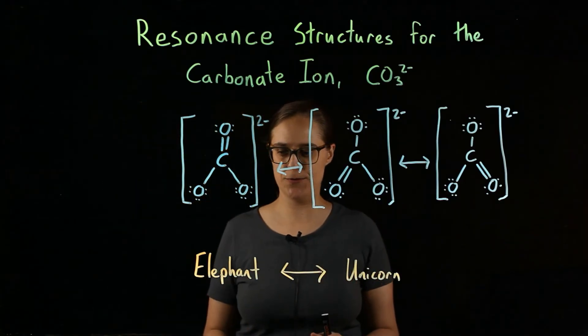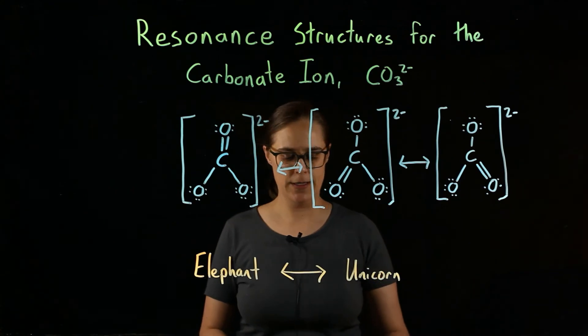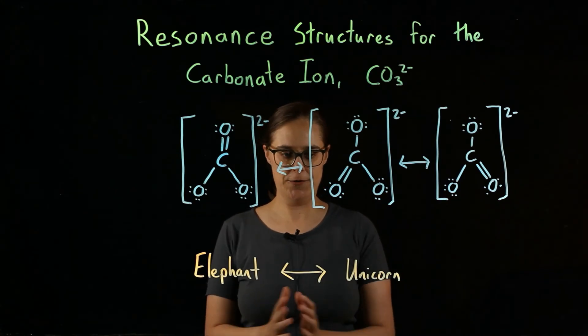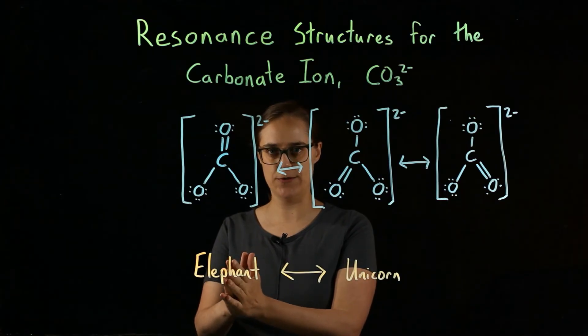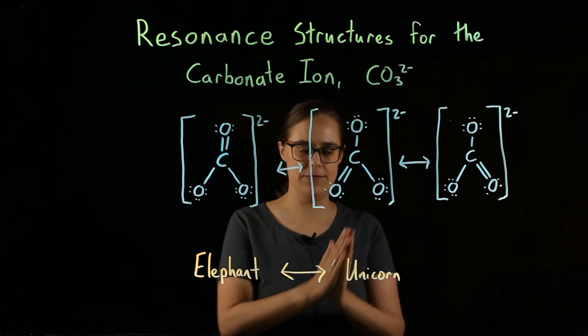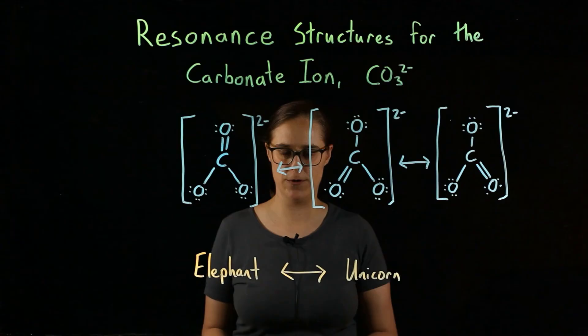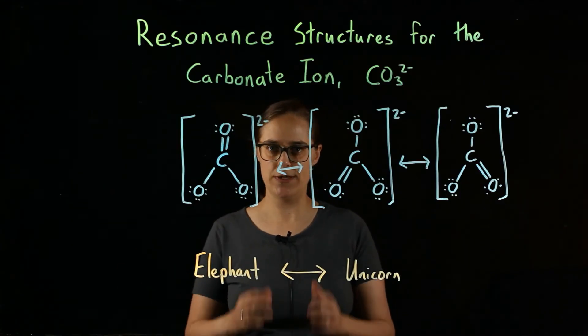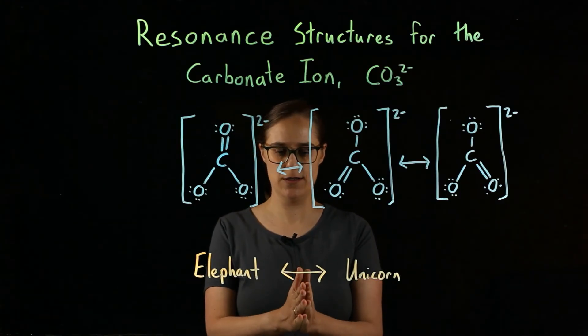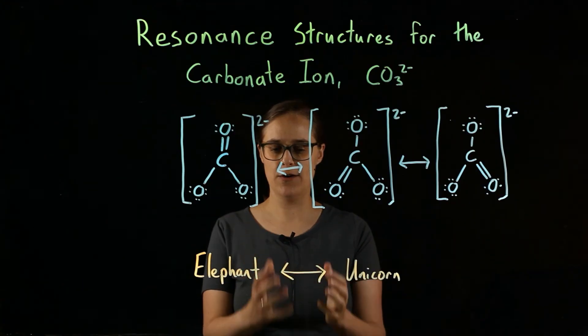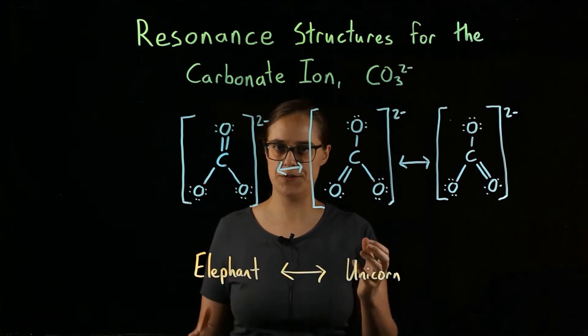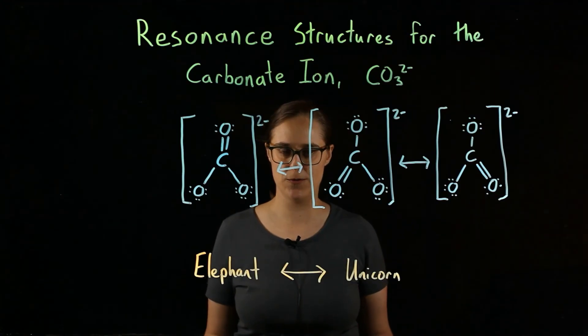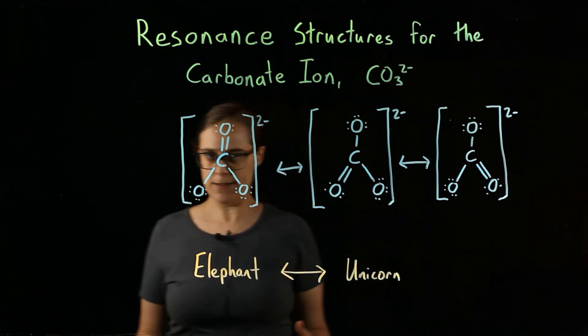Now, which of the following is true? Option one: if you take 100 photos of a rhinoceros, half will look like an elephant, half will look like a unicorn. Or option two: if you take 100 photos of a rhinoceros, all of them will look like a rhinoceros with some features of an elephant and some features of a unicorn. It's option two.